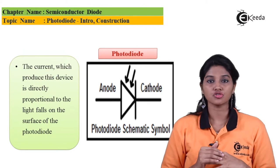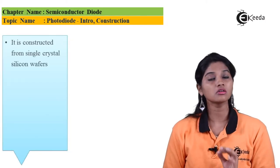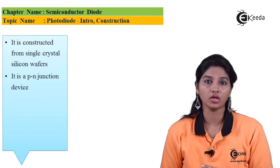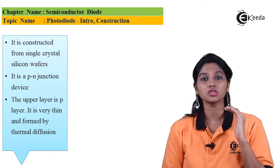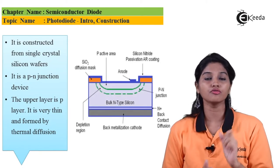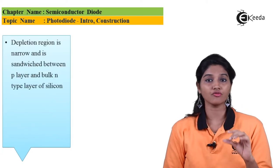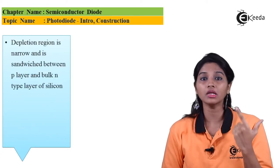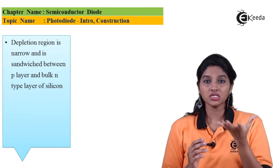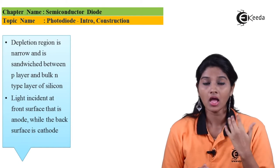Moving towards the construction of the photodiode: the photodiode is constructed from a single crystal silicon wafer. As it is a p-n junction diode, the p-region is present at the upper layer; it is very thin and is thermally diffusion generated. The depletion layer is sandwiched between the p-layer and the bulk n-layer.